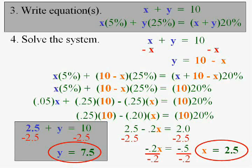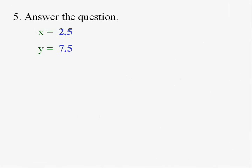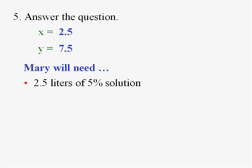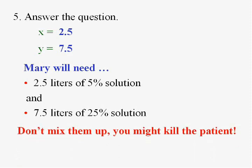So the answer is, very important you have the right units here, the answer is 2.5 liters of the 5% solution and 7.5 liters of the 25% solution. And note that they'll add up to 10 liters, she'll be in heaven. Make sure you don't mix them up. If you put 2.5 of the wrong type of solution, you may kill the patient. This is very important with dosages.